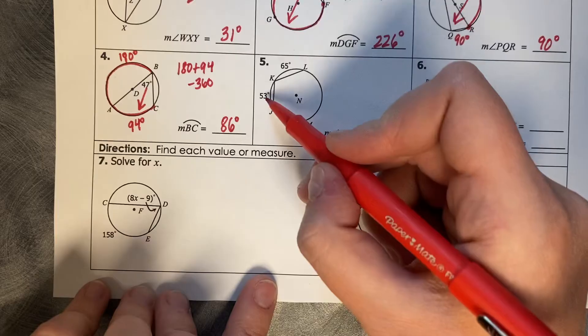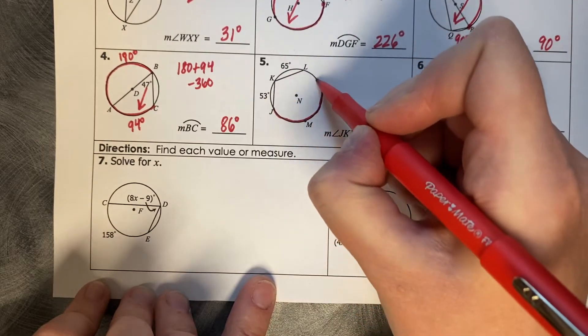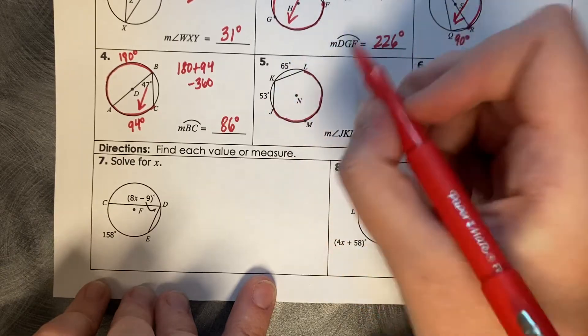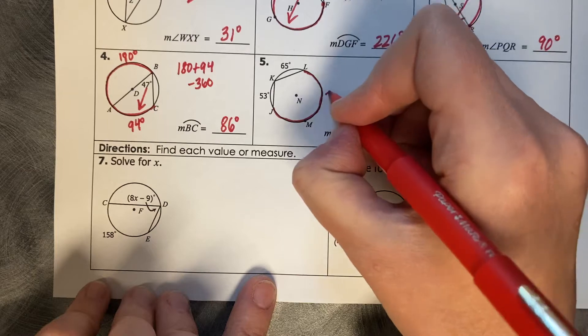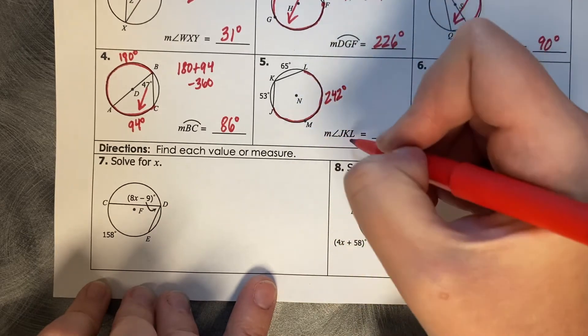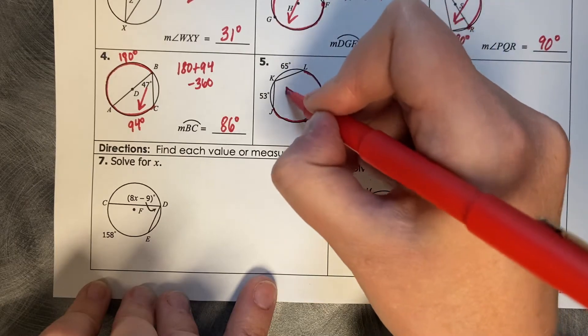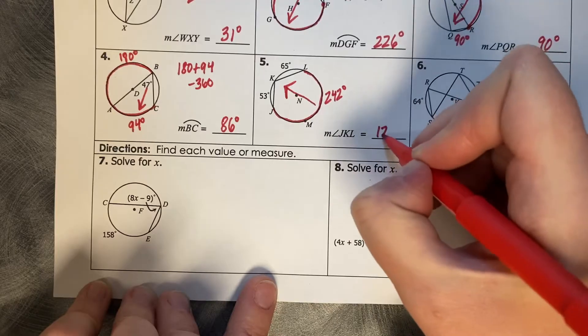All right, number 5. This is 53, and this is 65. Then this arc here, we would do 53 plus 65 minus 360, which is going to leave us 242. And then if we want our angle measure that matches it, JKL, we're going backwards, so you divide that by 2, so 121.